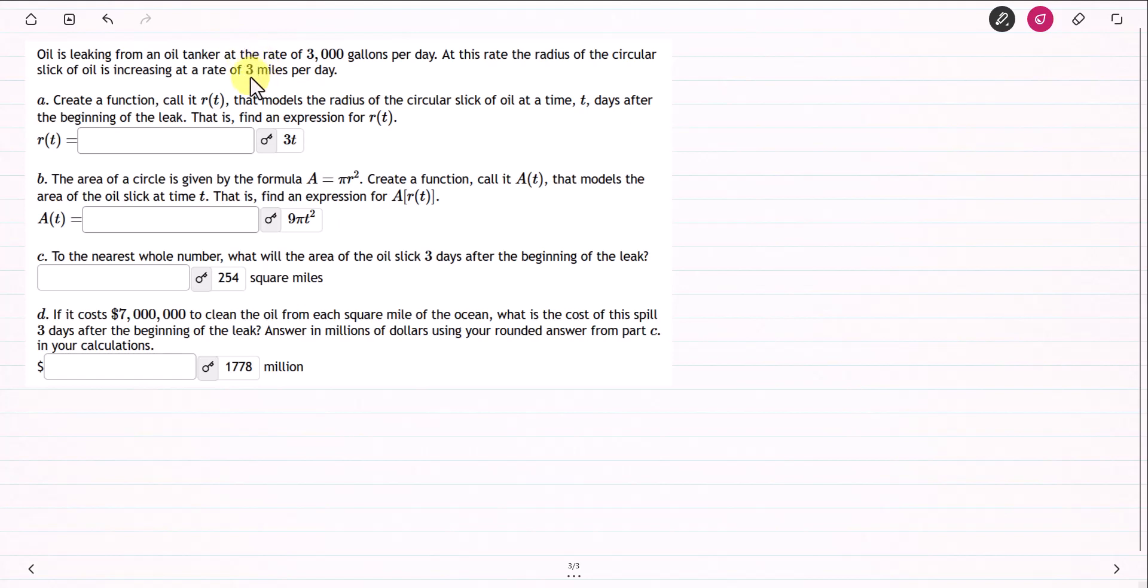Therefore, 3 is the slope. If you think about the formula y equals mx plus b, the slope intercept form. In this case, y is your R, and the slope is m, and x is t. The y-intercept should be 0.